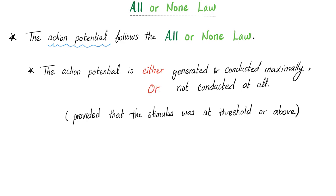If you treat me with respect — threshold — I'll give you the action potential. But if you treat me with less respect, aka sub-threshold, I will treat you with less respect, aka a local response. Can I give you half of the threshold and you give me an action potential? I cannot, because I follow the all or none law. I either excite or no — it's either zero or one.